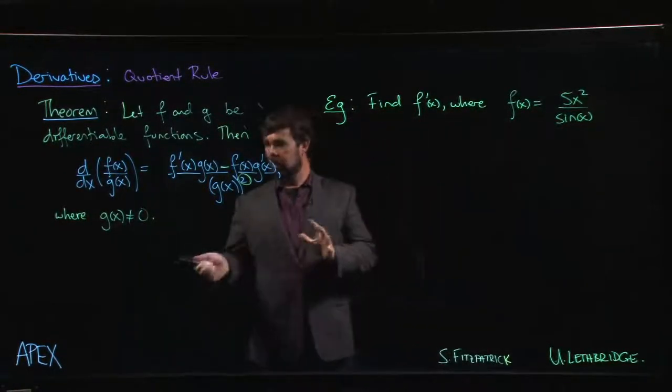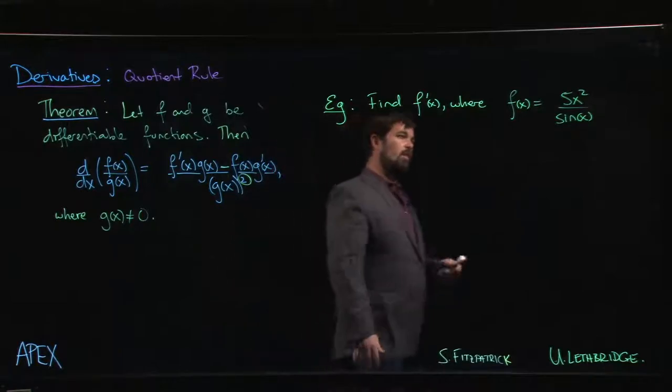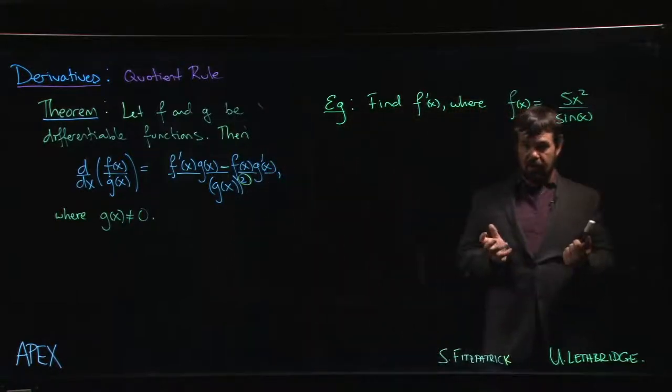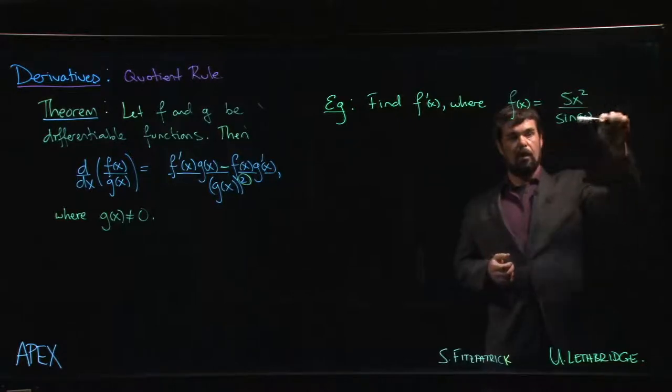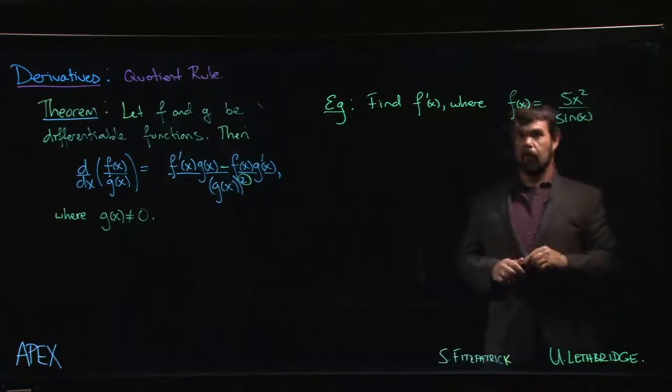So let's look at an example using the quotient rule. Here's a function which is an obvious candidate for using the quotient rule. We have the quotient of two functions, polynomial on top and sine function on the bottom.